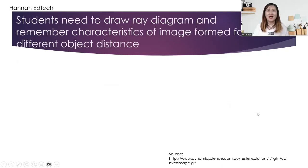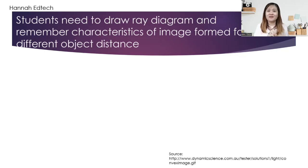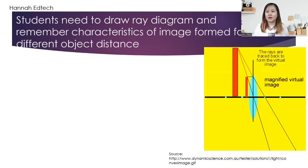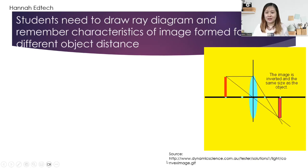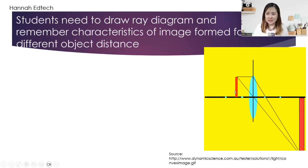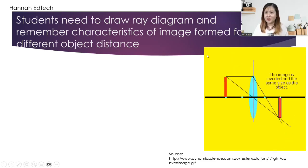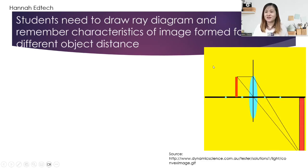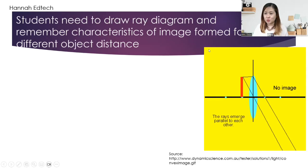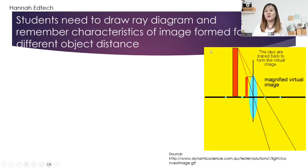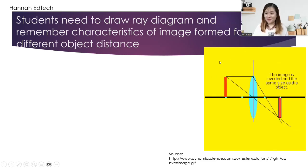Let's move on to the more complex part where we not only draw the ray diagram, but also remember the characteristics of the image formed for different object distances. Here is a GIF. You can see that when the object is within one focal length, there is no intersection, and you have to extend the dotted lines back to form a virtual image — the rays are diverging and you trace them back up.